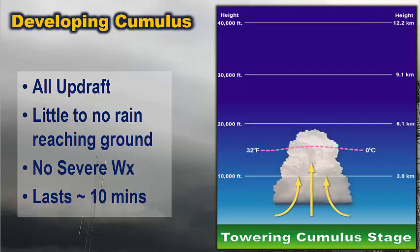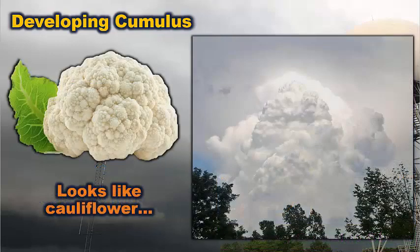In the first stage, the developing cumulus, it's all updraft. The arrows on the image show air rising up and creating a cloud — there is no downdraft yet. All the air is rising and converging. There is no severe weather during this stage, which lasts about 10 minutes. Visually, the cloud typically looks like a head of cauliflower — lots of little billowing spots shooting out. When you see that appearance, a thunderstorm is getting its act together and starting to develop, and it's one you'll want to monitor over the next several minutes.